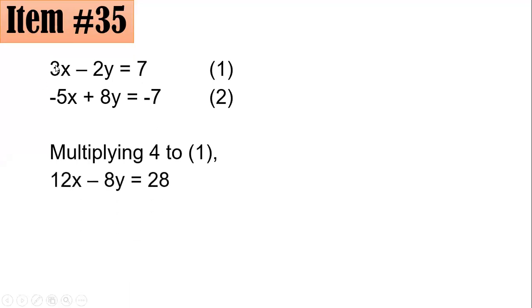I will multiply both sides of equation 1 by 4. Multiplying each of this by 4: 3x times 4 is 12x, negative 2y times 4 is negative 8y, 7 times 4 is 28. That's why you have here 12x minus 8y equals 28, and I have here the second equation.